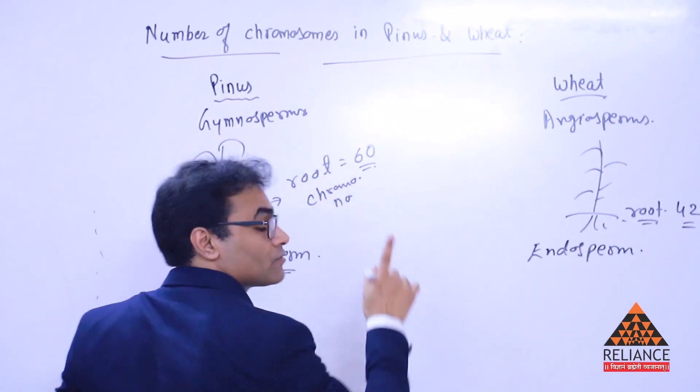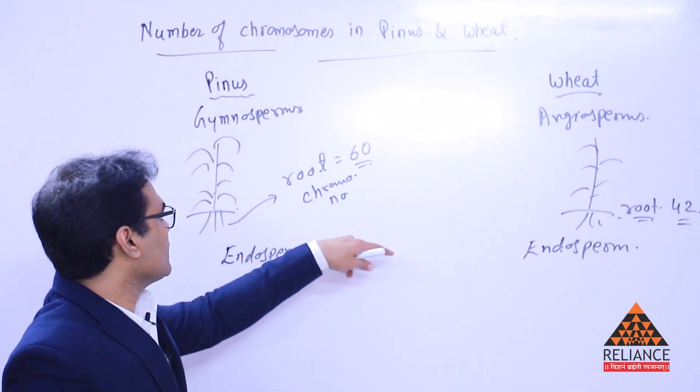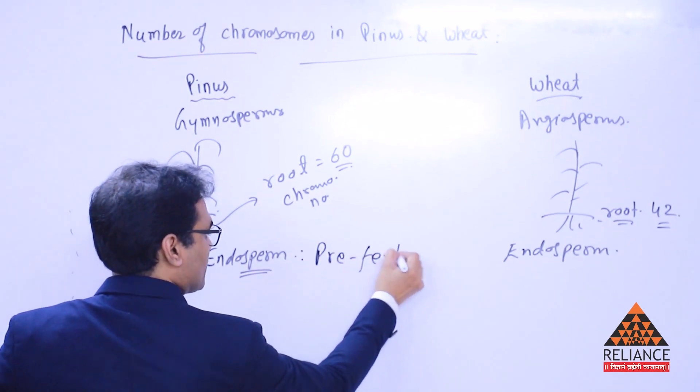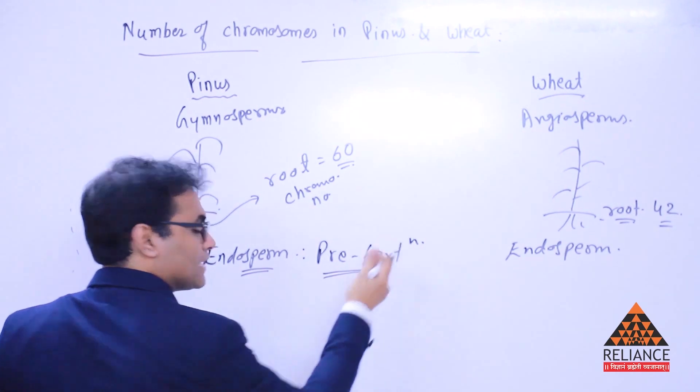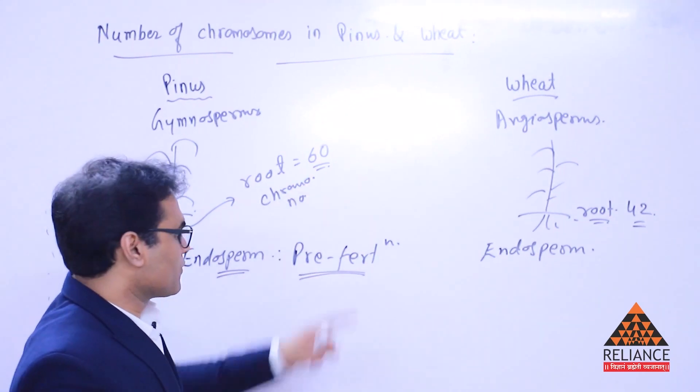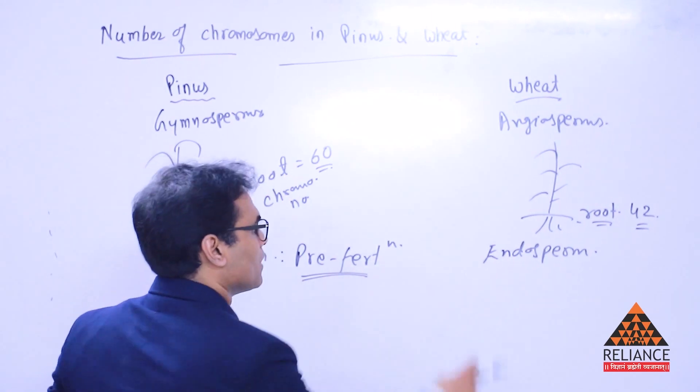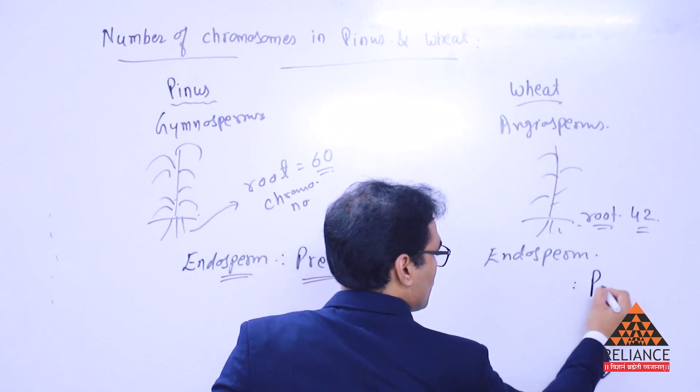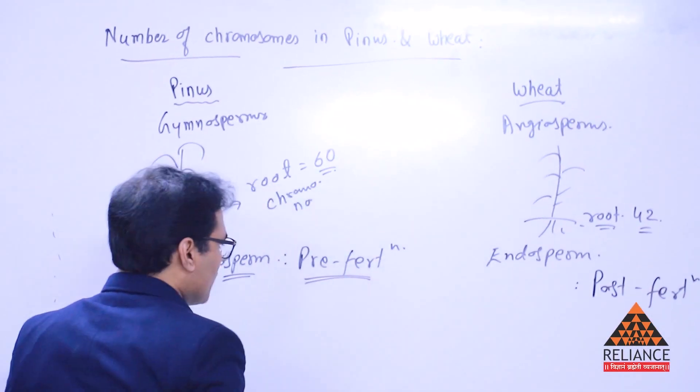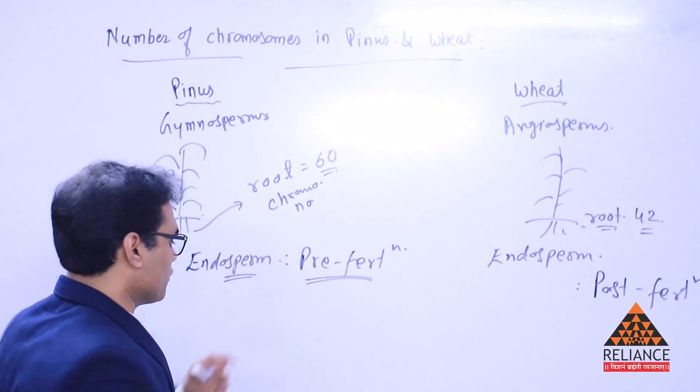Endosperm formation in case of Pinus is obviously a pre-fertilization event. Now, what exactly is that? Before the pre-fertilization event itself, we have the endosperm formation in this specific plant, meaning in the gymnosperms. Endosperm formation in case of wheat is a post-fertilization event.